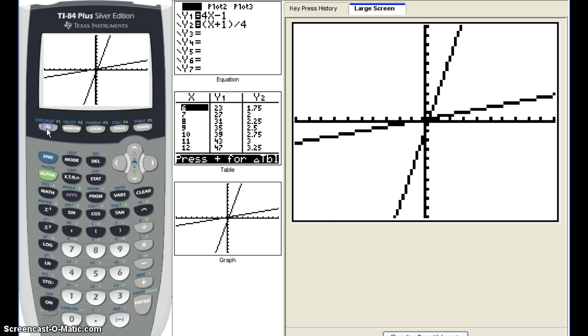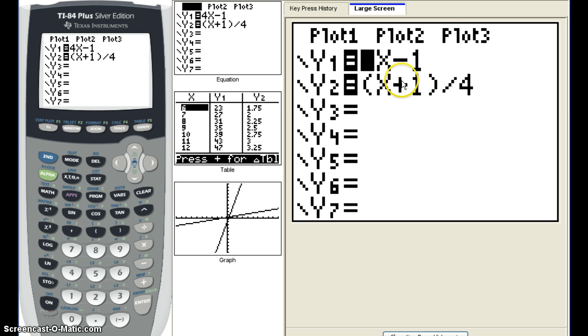Go back to your Y equals. Your numerator is a binomial, so make sure that goes in parentheses. If you type in X plus 1 divided by 4, it really means X plus 1/4. So make sure to use parentheses.